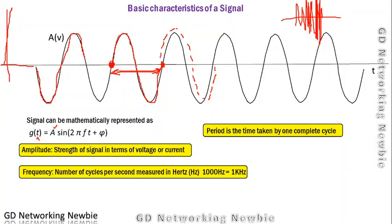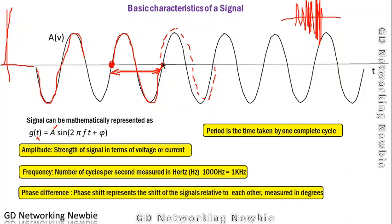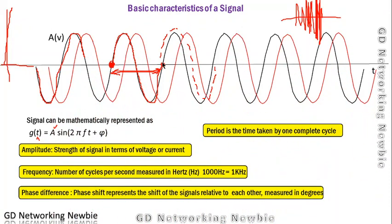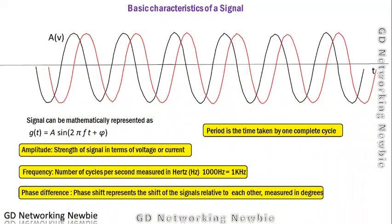The final point is phase or specifically phase difference. Phase difference is the phase shift which represents the shift of the signal relative to each other. Relative to each other means we should have two signals and we'll see the difference between them. It's better to take an example.